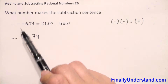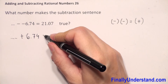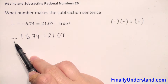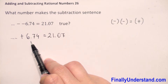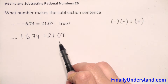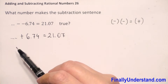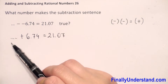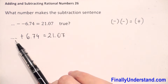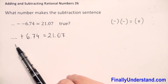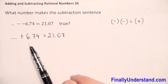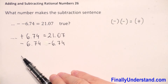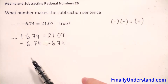Two negative signs give you one positive, so don't think they're wrong — just write a positive sign. We copy 21.07. We don't know the first number to which we add 6.74 to get 21.07, so we need to find this first number. To find it, I will subtract 6.74 from both sides.